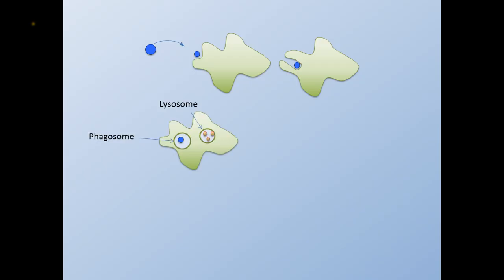Lysosomes within the phagocyte will move toward the phagosome. The lysosome fuses with the phagosome, forming a phagolysosome. The antigen is now exposed to the digestive enzymes and antimicrobial agents within the lysosome.